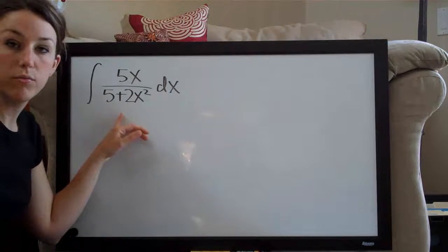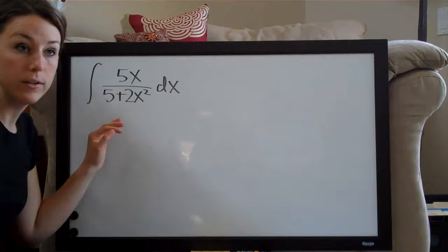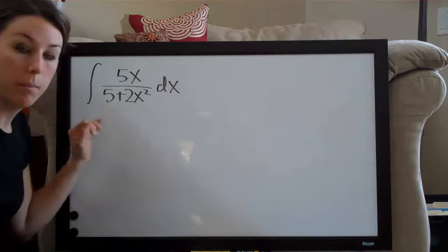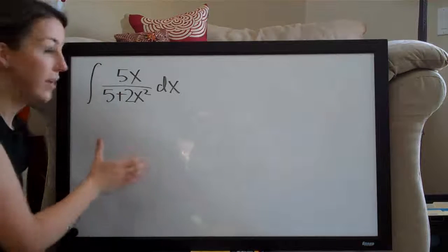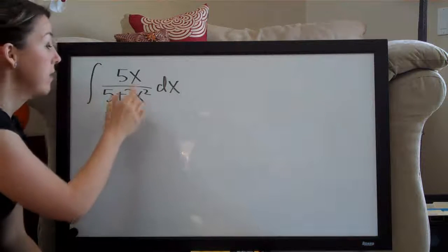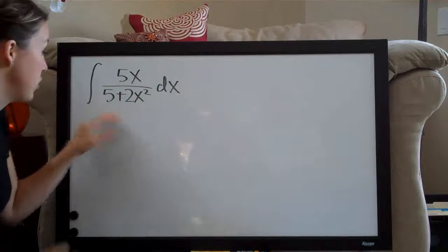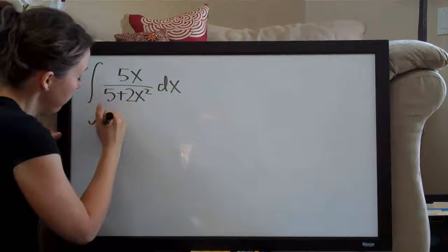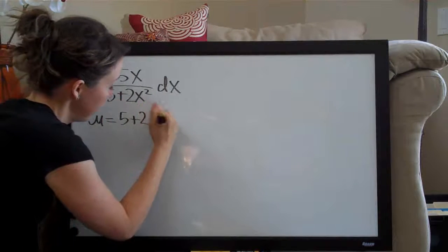U-substitution, remember we're looking for something to assign u to in our problem that will, when we take the derivative of it, make our problem easier to solve. In this case, it's kind of a giveaway because the denominator is so much more complicated than the numerator. So, we're going to go ahead and try to assign u to the bottom. We're going to say that u is 5 plus 2x squared.